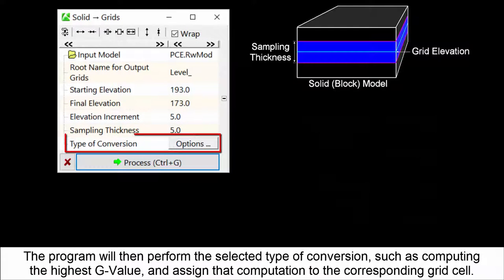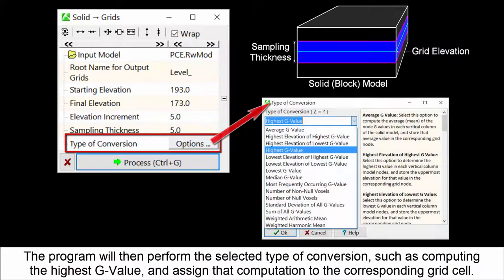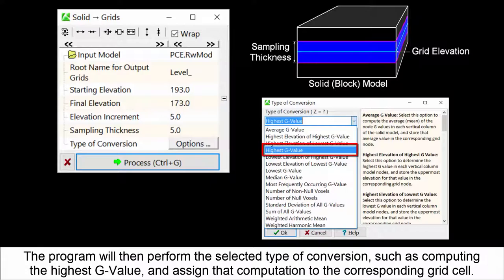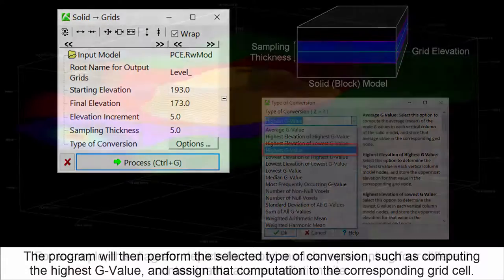The program will then perform the selected type of conversion, such as computing the highest G value, and assign that computation to the corresponding grid cell.